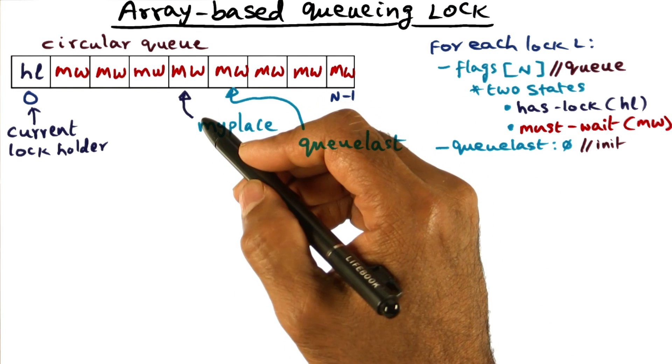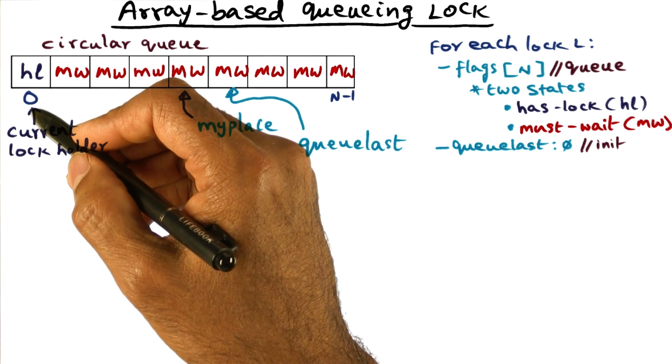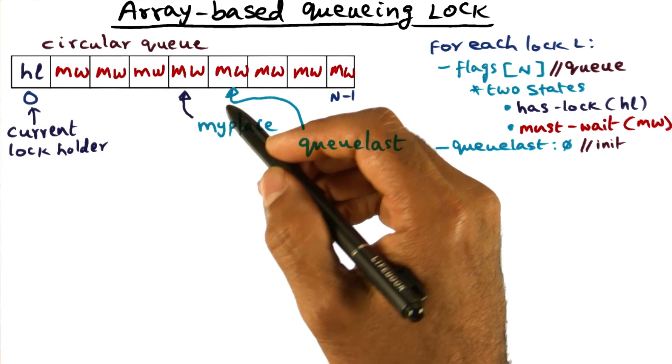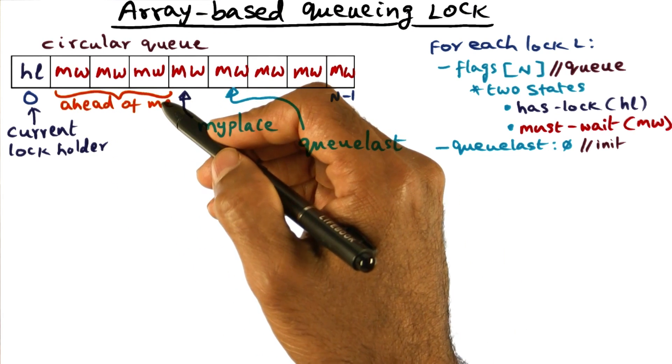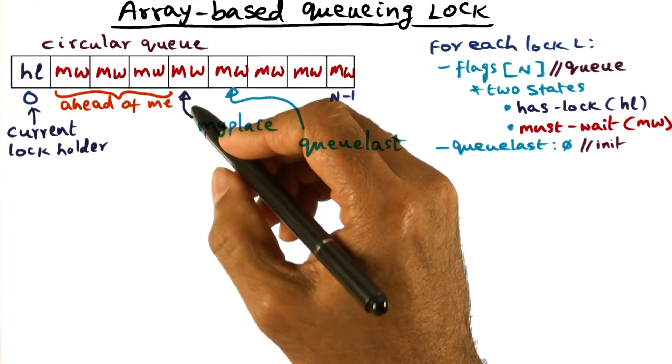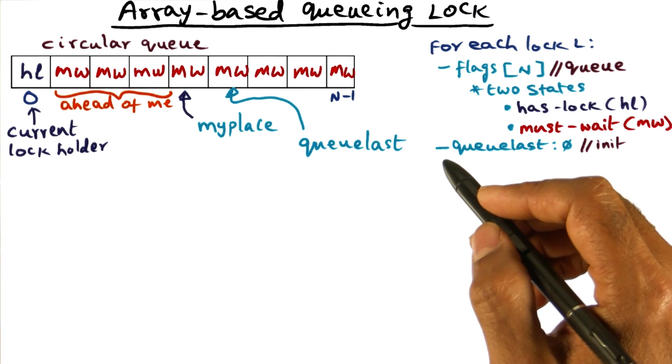Given the timing of my lock request, and the position of the current lock holder, you can see that I have some waiting to do, because there are quite a few requests that are ahead of me. And so I have some waiting to do before I get my turn in acquiring this particular lock.